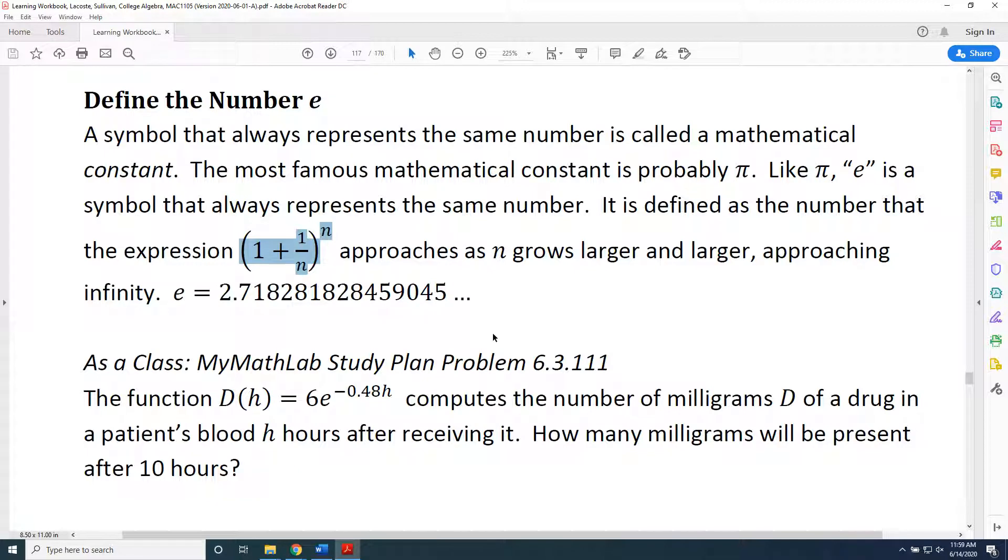Now, change the 100 to 1000. Enter it again, and you're going to get a number that is even closer to e. Then, change the n to a million, or a billion, or a trillion. The larger n gets, the closer the value your calculator shows you will be to e.